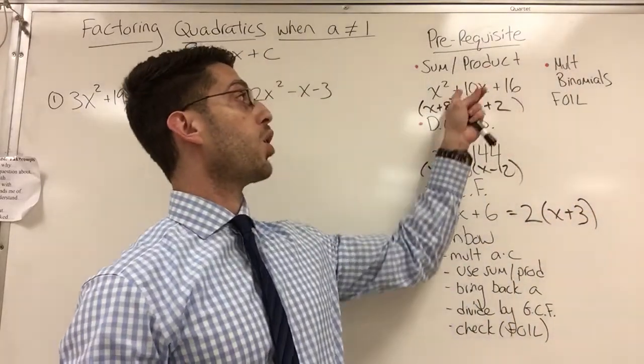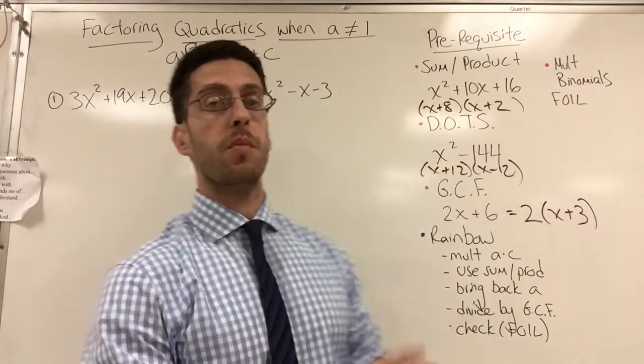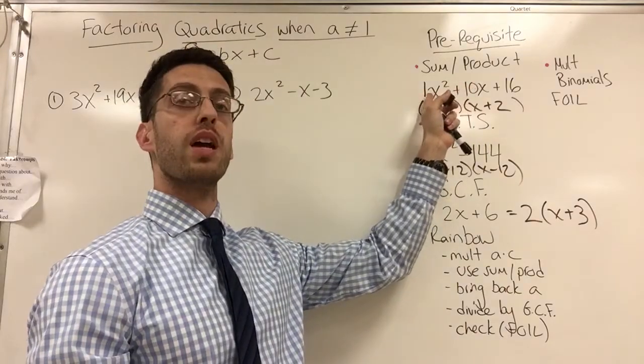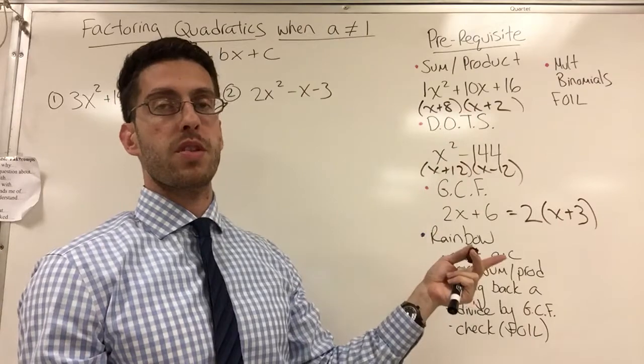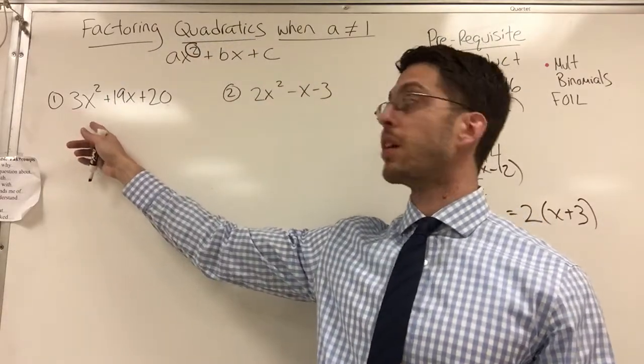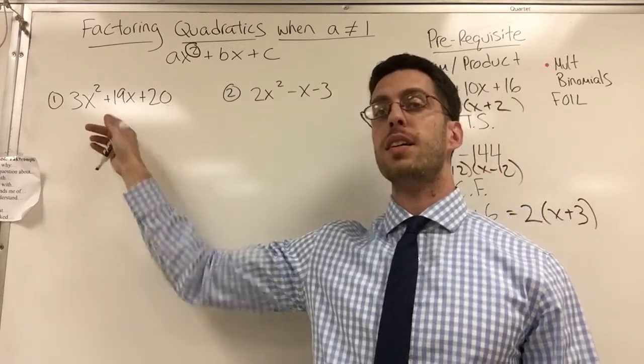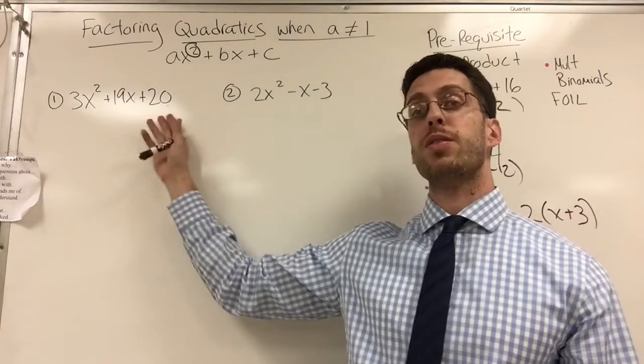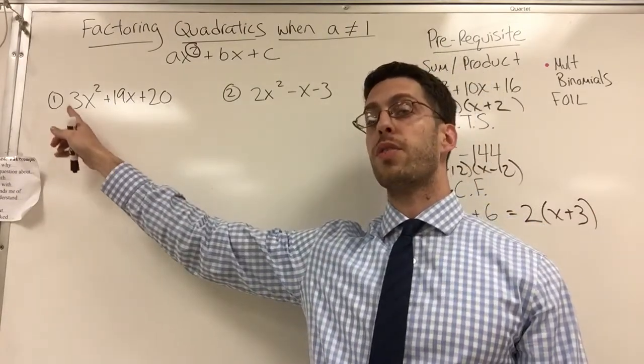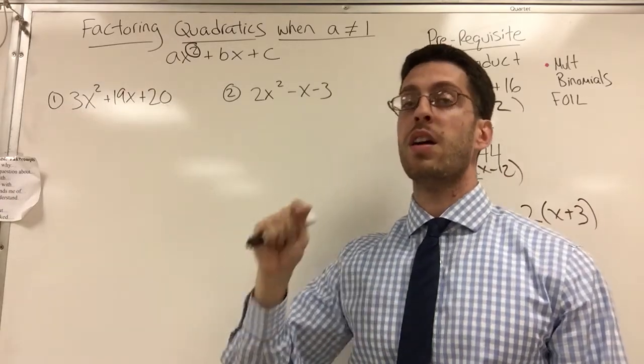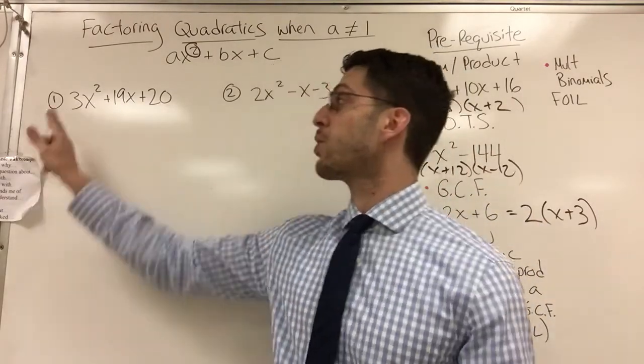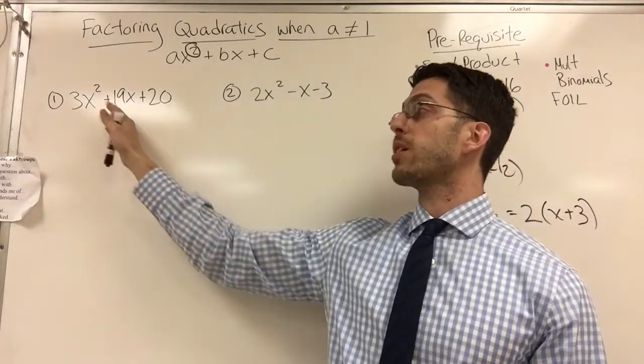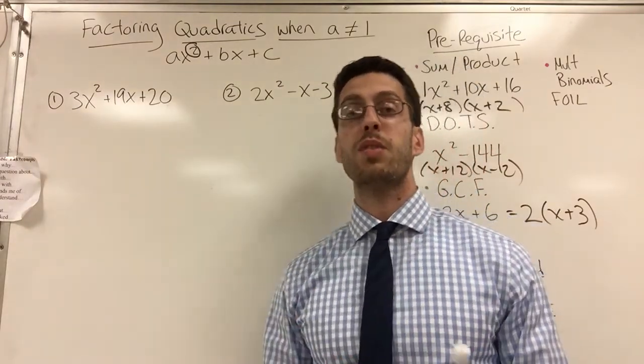Well, the sum product method only worked when the first term was x squared, meaning 1x squared. There was no number in front of the x squared. A was 1. Sum product method only works when a is 1 because it's very easy. I put an x and an x, I don't have to worry about numbers there. But here, think about the sum product method. Can I think of two numbers that multiply to 20 and add to 19? Let's see. 20 and 1? No. 5 and 4? No. 10 and 2? No. There isn't. The sum product method fails here. You know why it fails? Because A is not 1. The first term, the leading coefficient is a 3, not a 1. Sum product doesn't work. It's definitely not a difference of two squares. And if you look at all three terms, there's no GCF. It's actually the first thing you should do is look for a GCF. There is no GCF. Three doesn't go into all of them. Two doesn't go into all of them. There's none. So you've got to learn something new. It's called a rainbow.